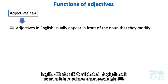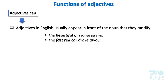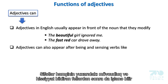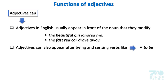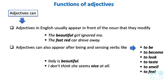Adjectives in English usually appear in front of the noun that they modify. Examples: The beautiful girl ignored me. The fast red car drove away. Adjectives can also appear after being and sensing verbs like: to be, to become, to look, to taste, to smell, to feel. Examples: Italy is beautiful. I don't think she seems nice at all. You look tired. This meat tastes funny.